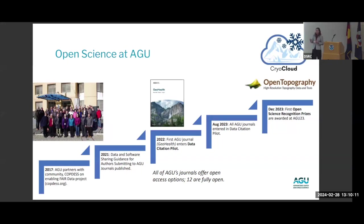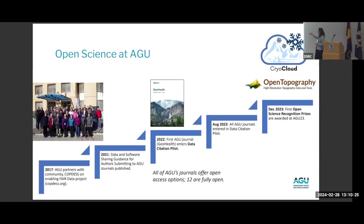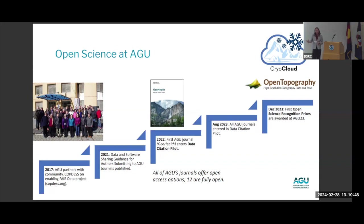In 2022 and 2023, we made a big push to dedicate more staff time to helping authors implement this. Authors have come to us with many questions about how to share their data, what's an appropriate way to share it, and when. So we've dedicated staff efforts to helping them do this right. We've also implemented an open science recognition prize — and if you work in the earth and space sciences, you might recognize some of these software packages that were among our first awardees, honored at AGU 23 in San Francisco.